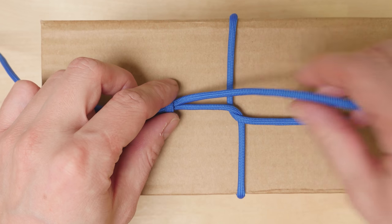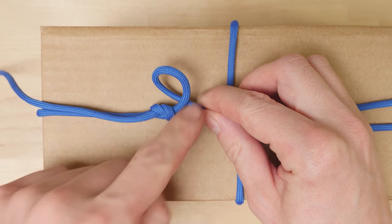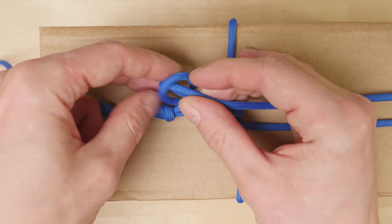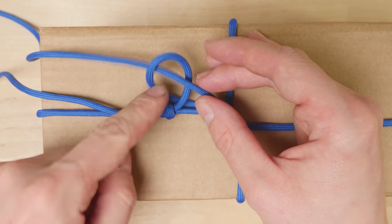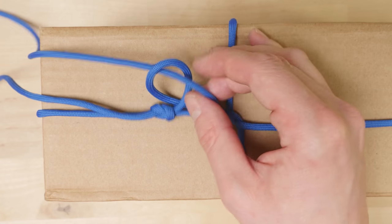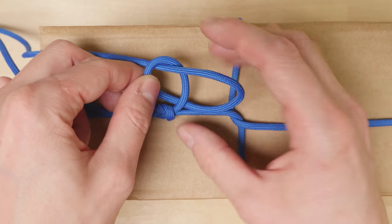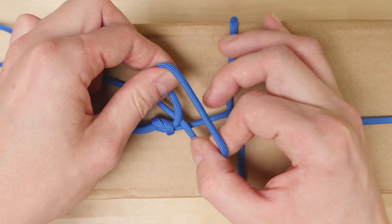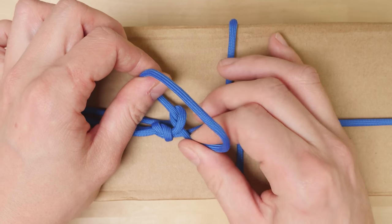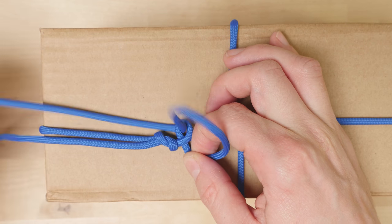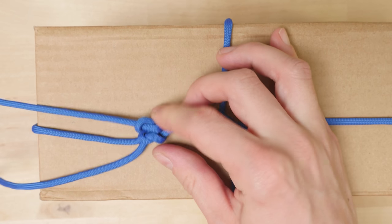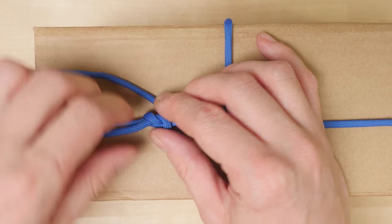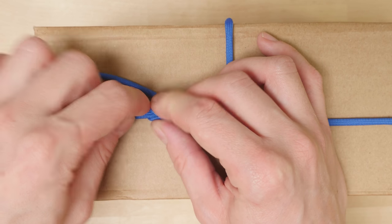And then feed the working end through, creating an overhand knot. We tighten it up as close to the reef knot as possible. And then do an overhand knot on the other side as well.